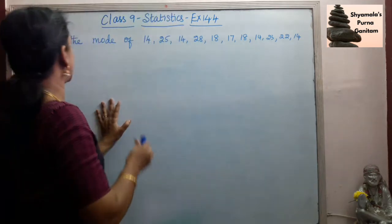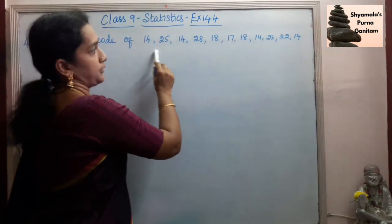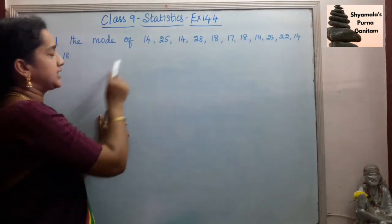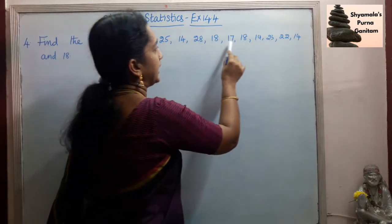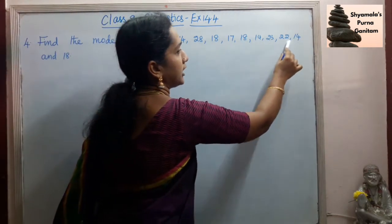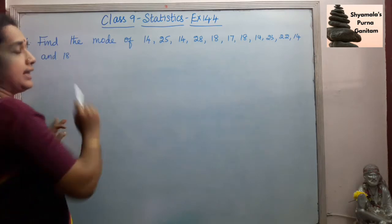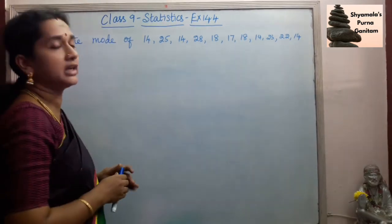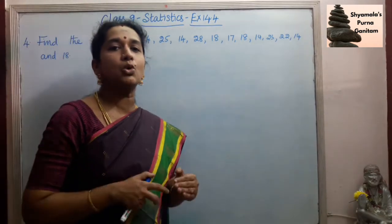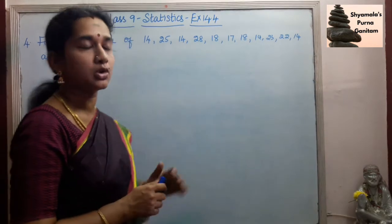Now next lesson. Fourth one is find the mode of: 14, 12, 14, 28, 18, 17, 18, 14, 23, 22, 14 and 18. So for this given data we are asked to find mode. So mode is the most repeated frequency. That is called the mode.